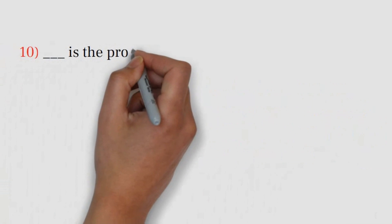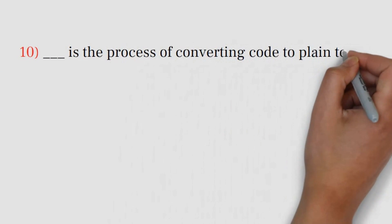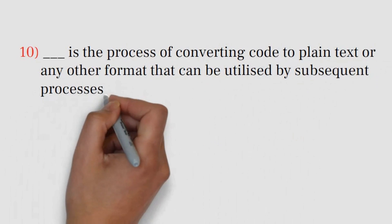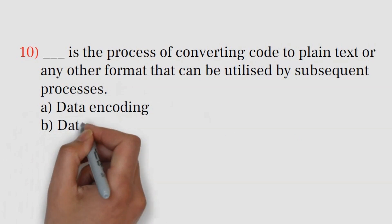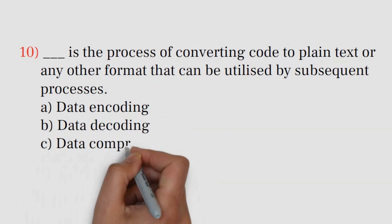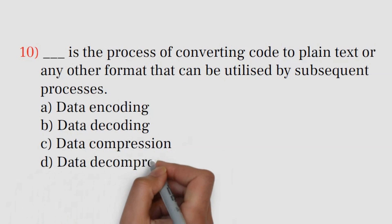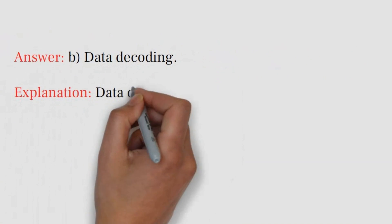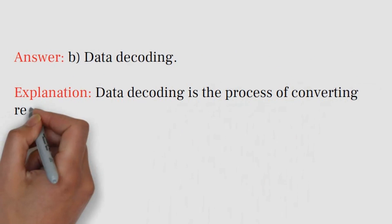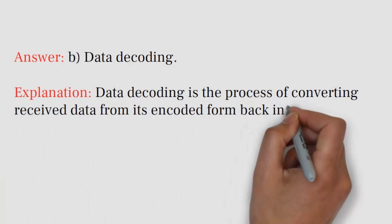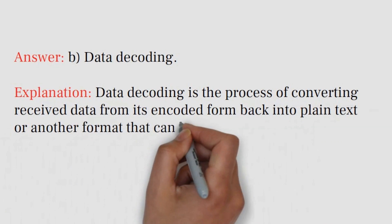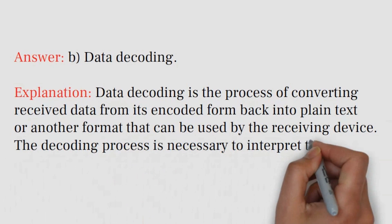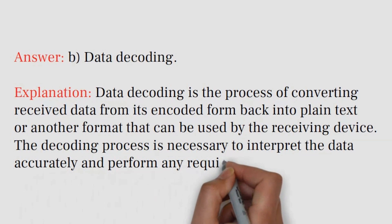Question number ten: ______ is the process of converting code to plain text or any other format that can be utilized by subsequent processes. A) Data Encoding, B) Data Decoding, C) Data Compression, D) Data Decompression. Answer: B) Data Decoding. Explanation: Data decoding is the process of converting received data from its encoded form back into plain text or another format that can be used by the receiving device. The decoding process is necessary to interpret the data accurately and perform any required processing or actions.